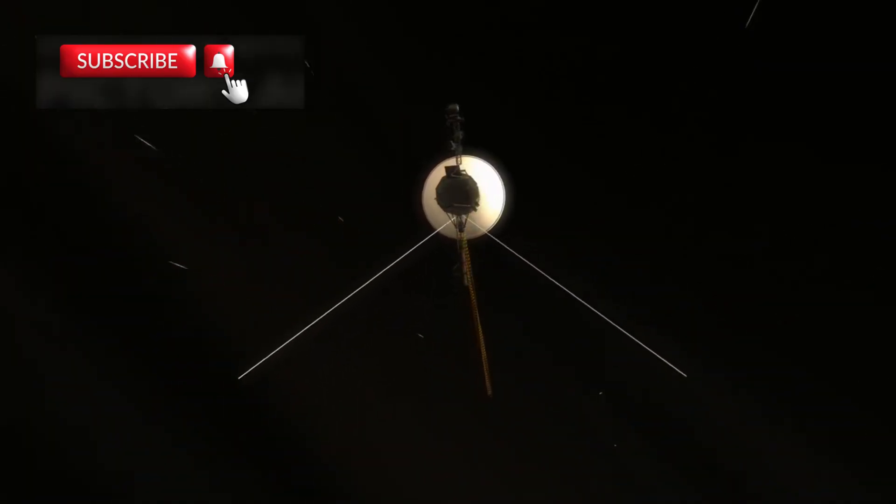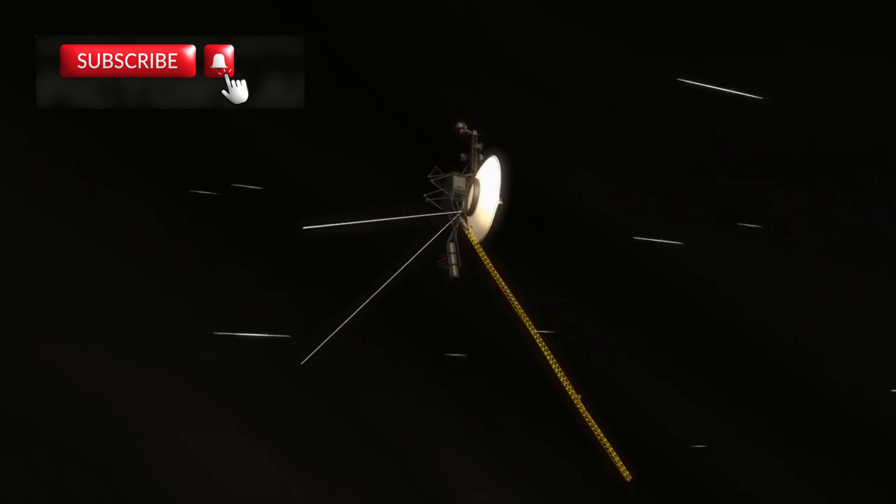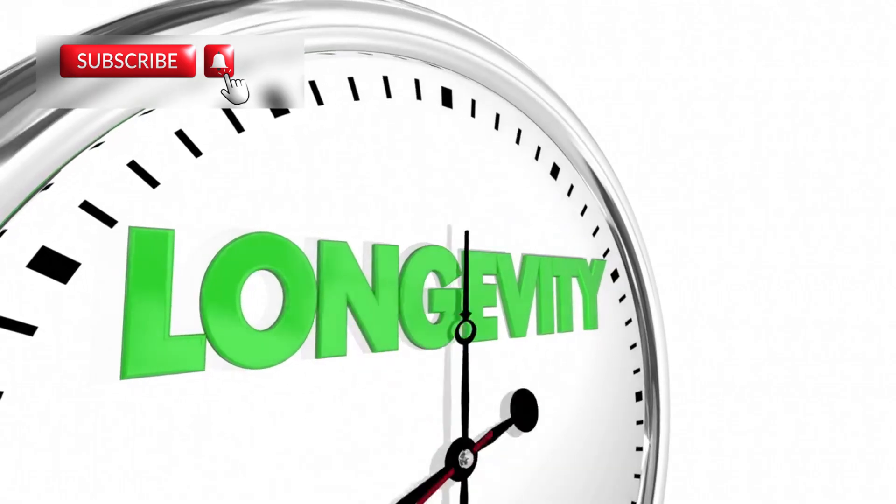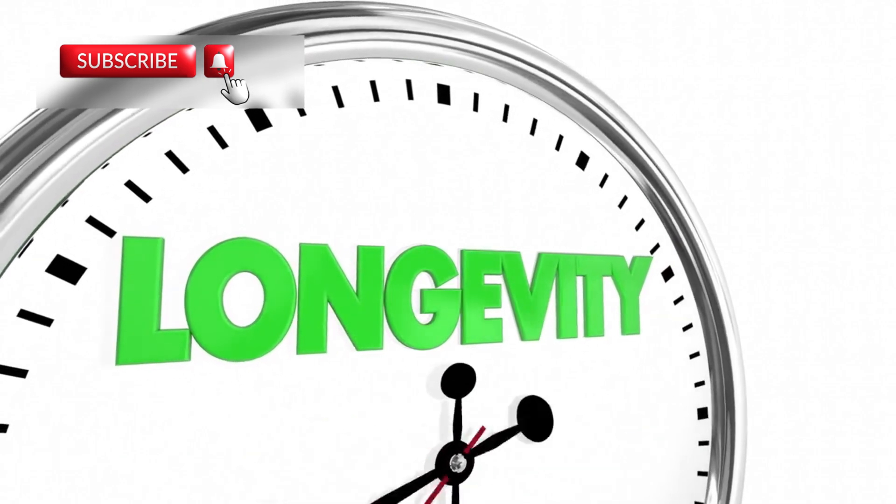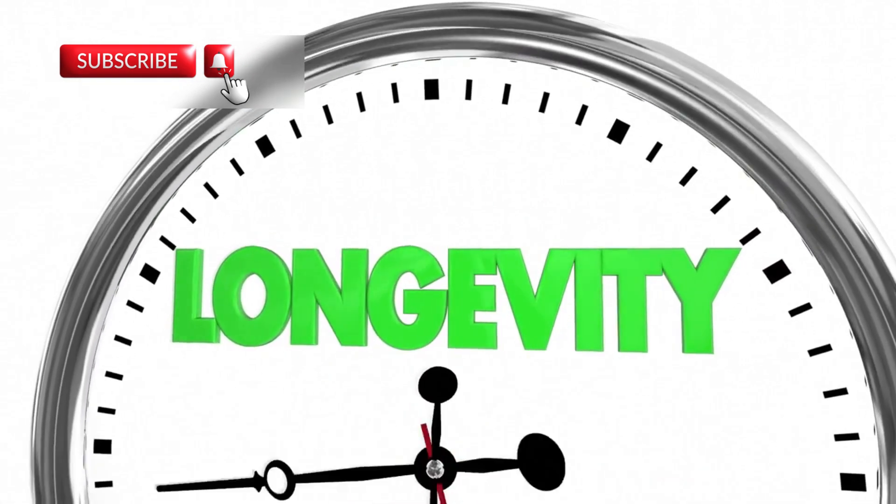Voyager 1 was launched alongside its twin, Voyager 2, both built with 1970s technology and sent to uncover secrets of the outer solar system. At the time, very few people believed these small spacecraft would outlive their five-year mission or function far beyond their original plan.